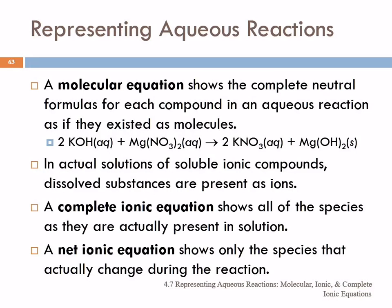A molecular equation shows the neutral formulas for each compound as if they were molecules. For example, potassium hydroxide reacting with magnesium nitrate to form potassium nitrate and magnesium hydroxide. We can tell from the state symbols that magnesium hydroxide is the precipitate. All these other compounds are aqueous.